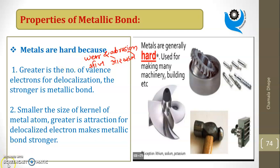Why are the metals hard? See here, greater number of valence electrons for delocalization, the stronger is the metallic bond. If I hit this metal sheet with a hammer, it doesn't break because the layers can adjust. Greater the number of valence electrons for delocalization, stronger is the metallic bond, so it doesn't break easily.